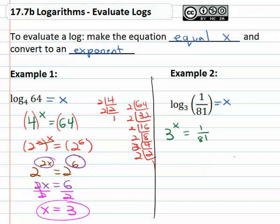We need to change eighty one into its prime factorization. Eighty one divided by three is twenty seven, divided by three is nine, divided by three is three, divided by three is one. So we have three to the x is equal to three to the negative fourth. The negative is what creates the fraction.